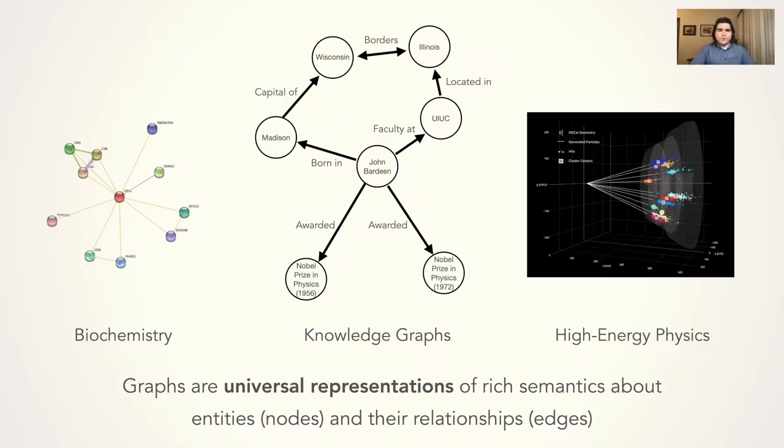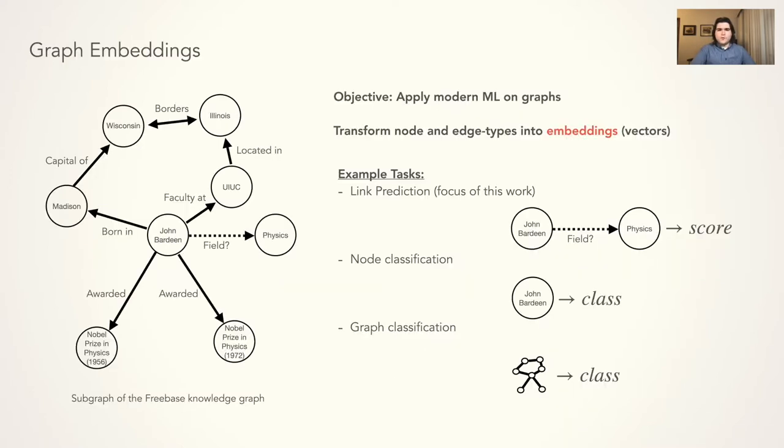Graphs are a powerful representational structure. They can be used to model a wide variety of scientific and industrial data, from particle physics to protein interactions. Complex relationships between entities can be represented by a graph. To perform predictive tasks over graph structured data, graph embeddings have emerged as the de facto method.